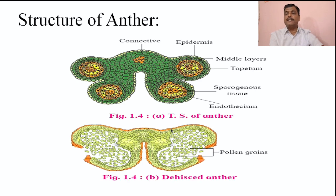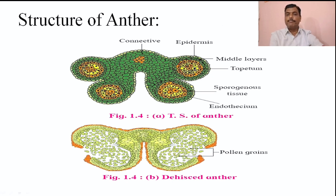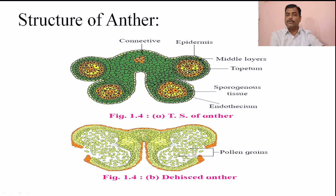Now we will see the internal structure of the anther, which is the important part as far as the male reproductive structure is concerned. It is a bilobed anther in transverse section. We can clearly observe that in each anther lobe — this portion is one anther lobe and this is the second anther lobe — in each anther lobe, two pollen sacs are present. These two anther lobes are connected with each other with the help of a tissue known as the connective.